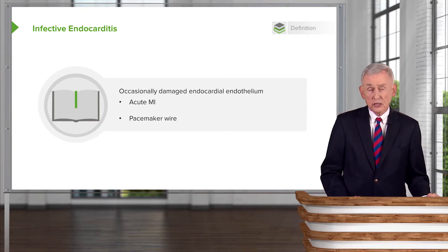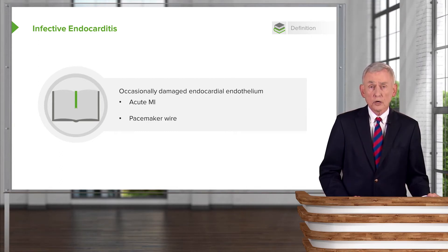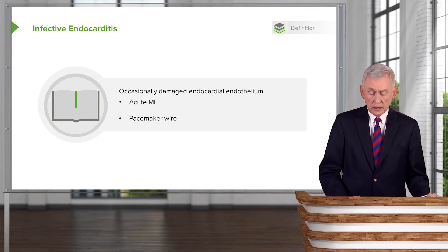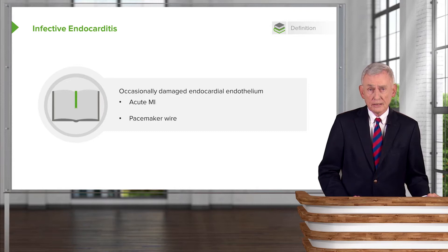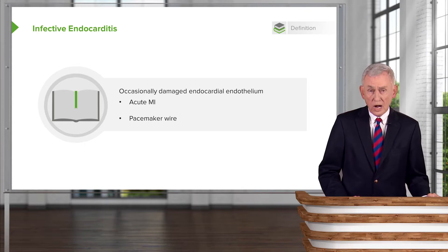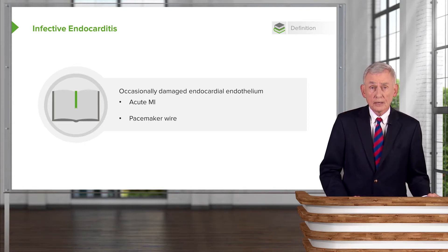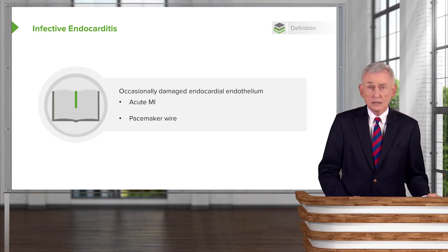Occasionally it's from a damaged endocardial surface. There have been cases of endocarditis following an acute myocardial infarction where the vegetations are found on the damaged heart muscle. Many patients nowadays have pacemakers, and so you can get an infection related to a pacemaker wire that sheds organisms into the bloodstream and causes something very similar to a valvular infection.